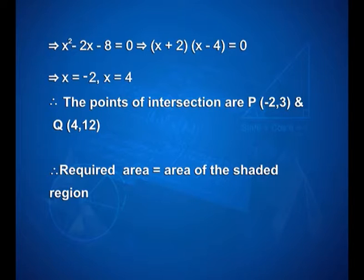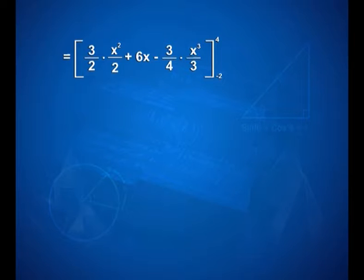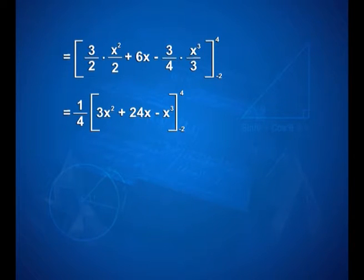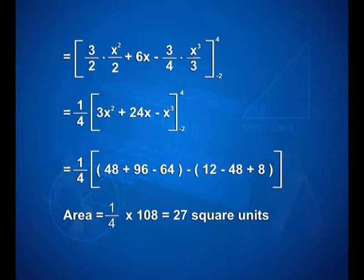Therefore, required area is equal to the area of the shaded region, given by integral minus 2 to 4 of [(3x plus 12)/2 minus 3/4 x square] dx. That is equal to [3/4 x square plus 6x minus x cube/4] with limits minus 2 and 4, which gives 1/4 into (3x square plus 24x minus x cube) with limits minus 2 and 4. On applying the limits, we have 1/4 into (48 plus 96 minus 64 minus 12 plus 48 minus 8). Therefore, the required area is 1/4 into 108, that is 27 square units.